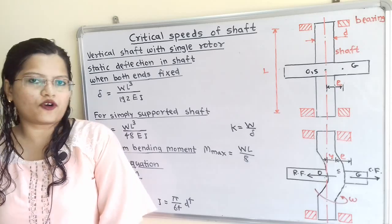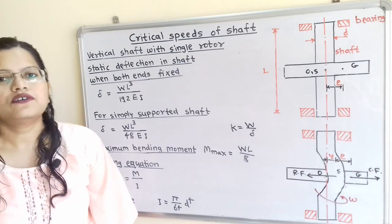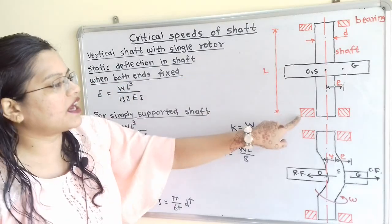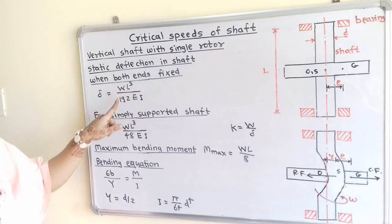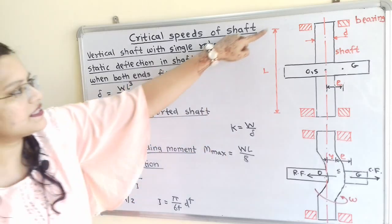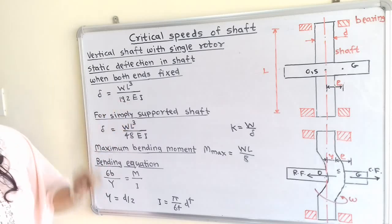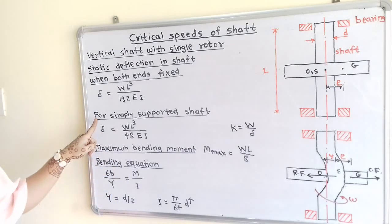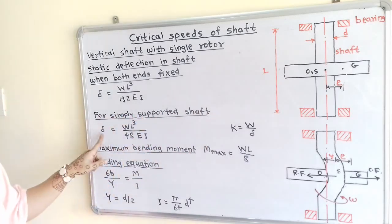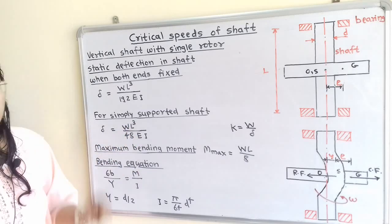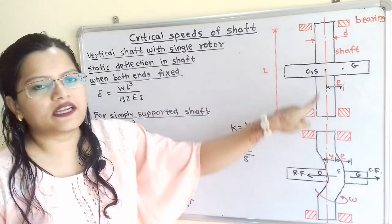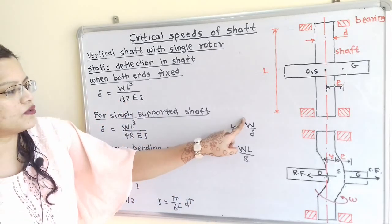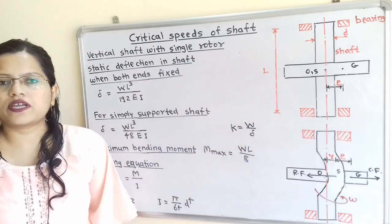Now for important formulas: first is static deflection in the shaft. Since the shaft is supported in bearings, there are two conditions. For both ends fixed: delta = WL³ / 192EI, where W is weight, L is length, E is modulus of elasticity, and I is the second moment of area. For a simply supported shaft: delta = WL³ / 48EI. The stiffness relation is K = W / delta.